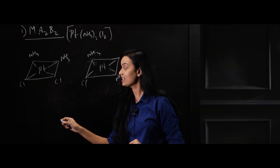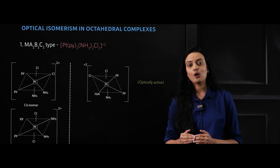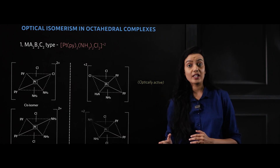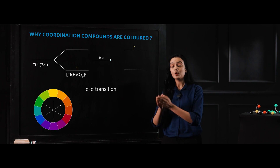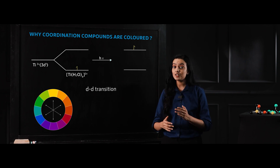Further, we'll look into a phenomenon where a compound with the same molecular formula is represented in different structures. Whenever a compound is formed, it has a definite shape and geometry and exhibits some properties like color and magnetic behavior.